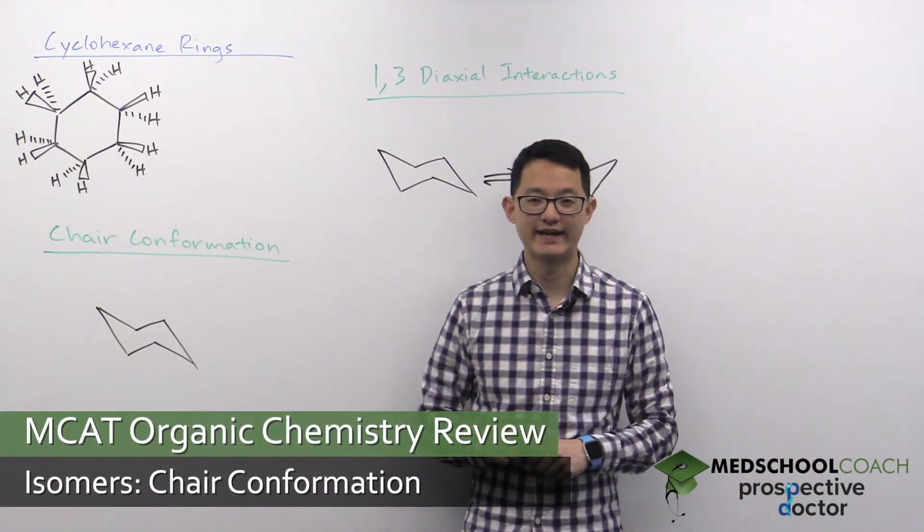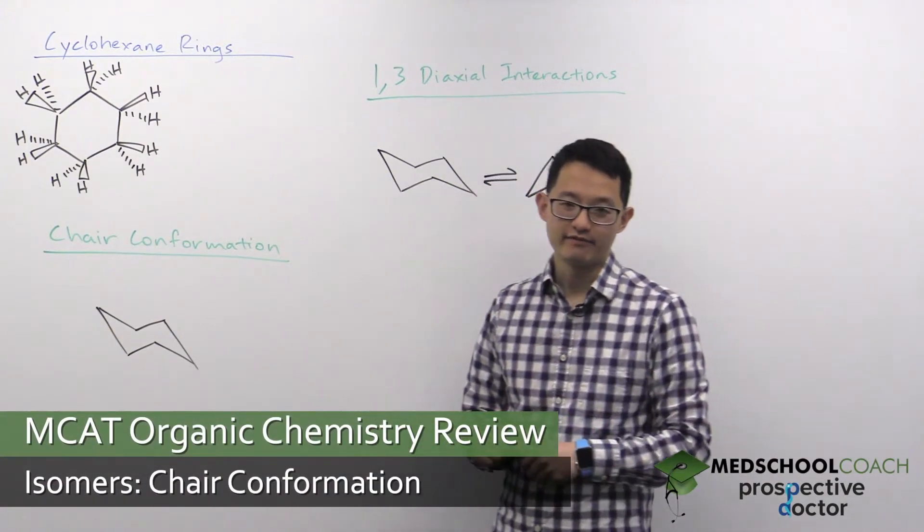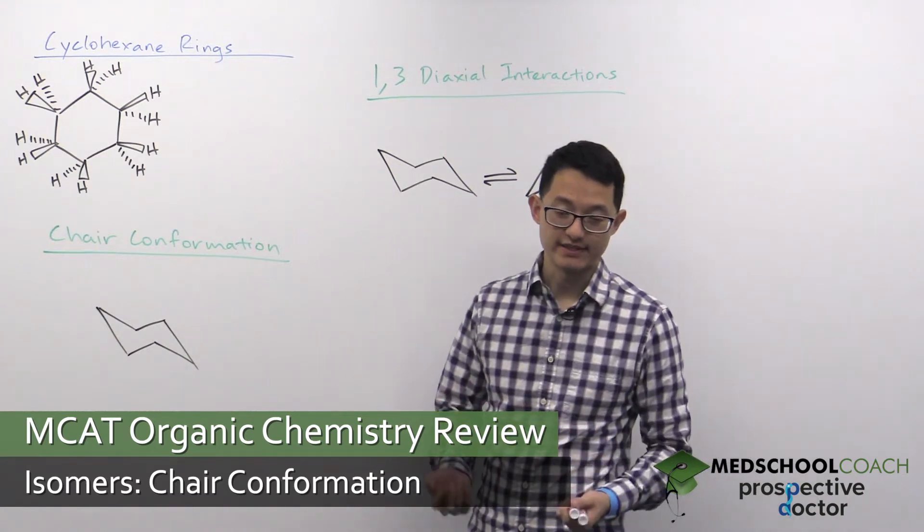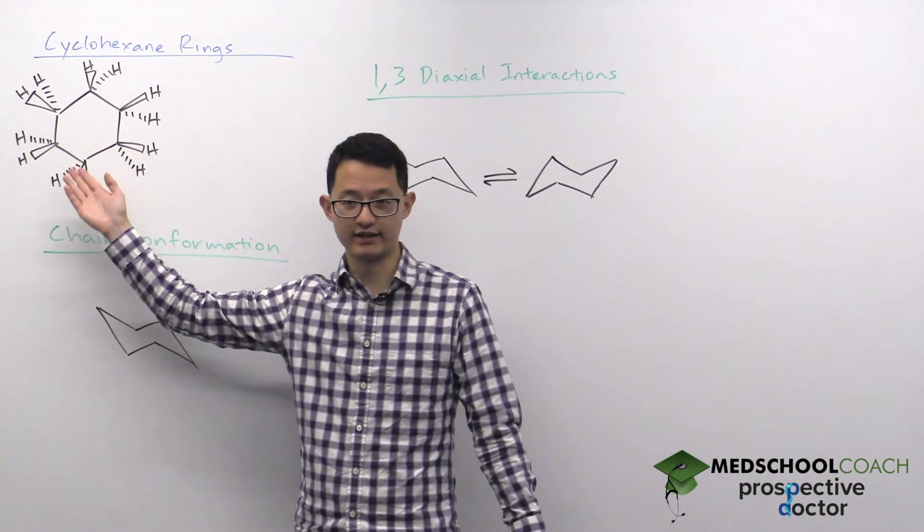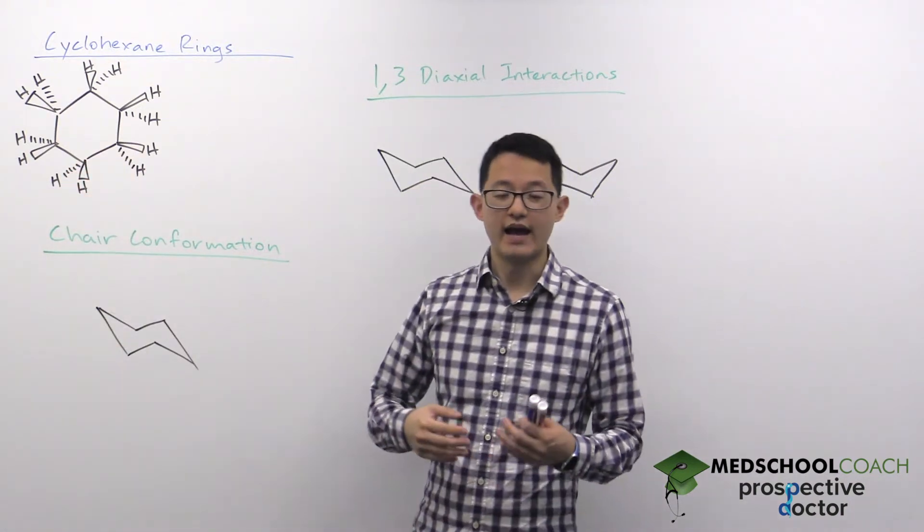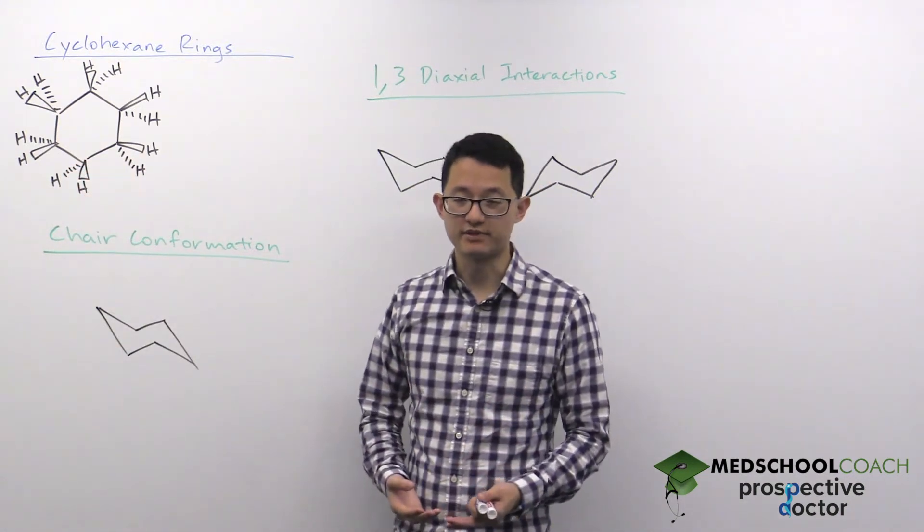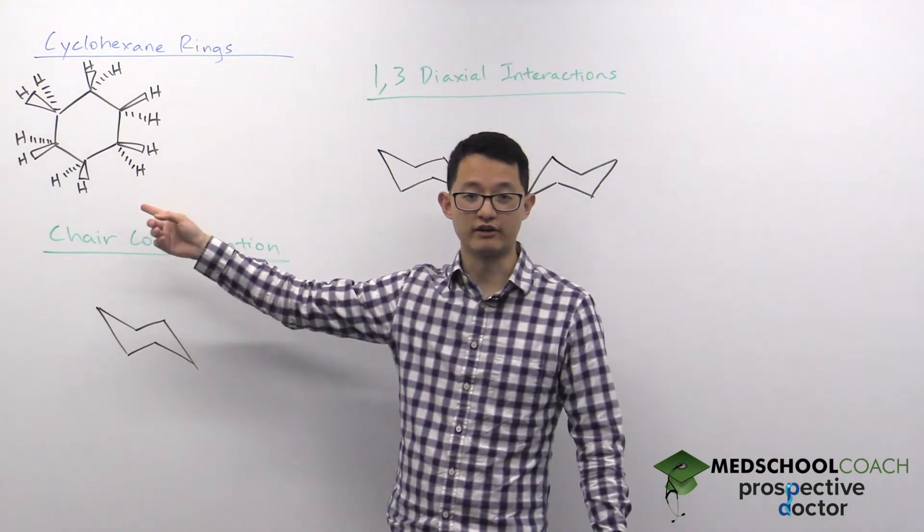Let's talk about cyclohexane rings. Often when you're looking at diagrams of cyclohexane rings, you'll see them drawn as hexagons like I've drawn here. After our discussion on conformational isomers, you should recognize that this is not a very good drawing.